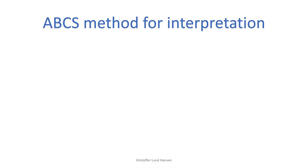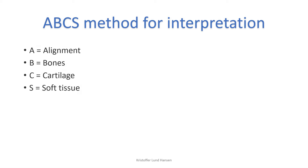Now let's get down to the main part: how to evaluate the x-ray. We will focus on the ABCS method, though there are other methods that work just as well. The important thing is that you get to check everything you need to. The ABCS method can also be used similarly for other skeleton x-rays. ABCS stands for A for alignment, B for bones, C for cartilage, and S for soft tissue.